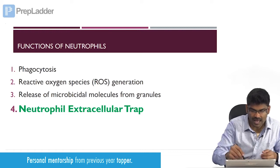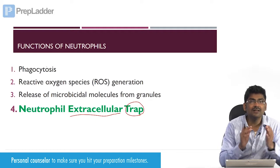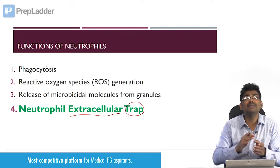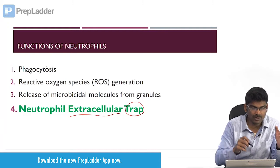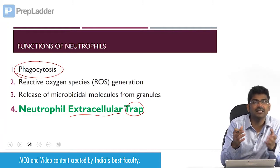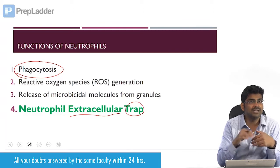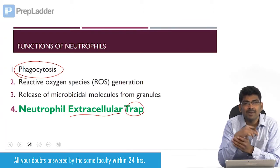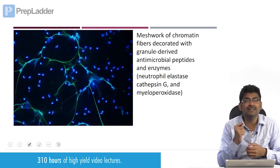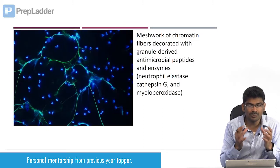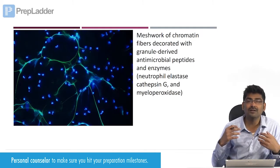The word 'extracellular' means the trap is extracellular — not inside the neutrophil. Phagocytosis happens and kills the pathogen inside the neutrophil, but here it is going to happen outside. What you are seeing is a beautiful picture of neutrophil extracellular trap.